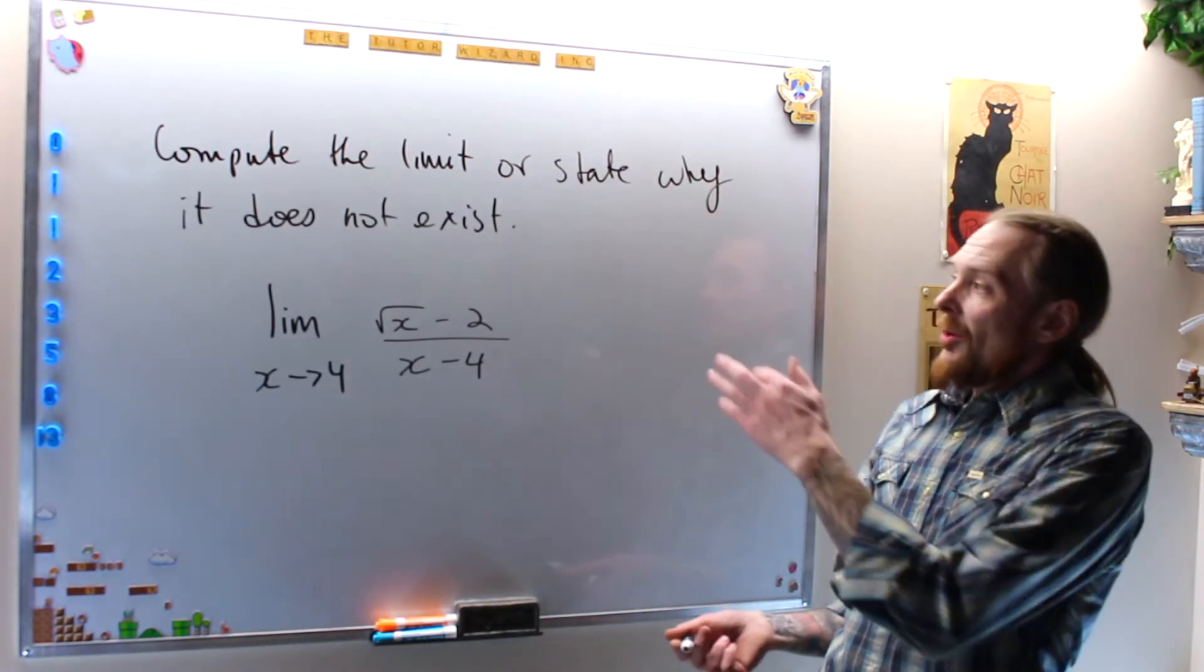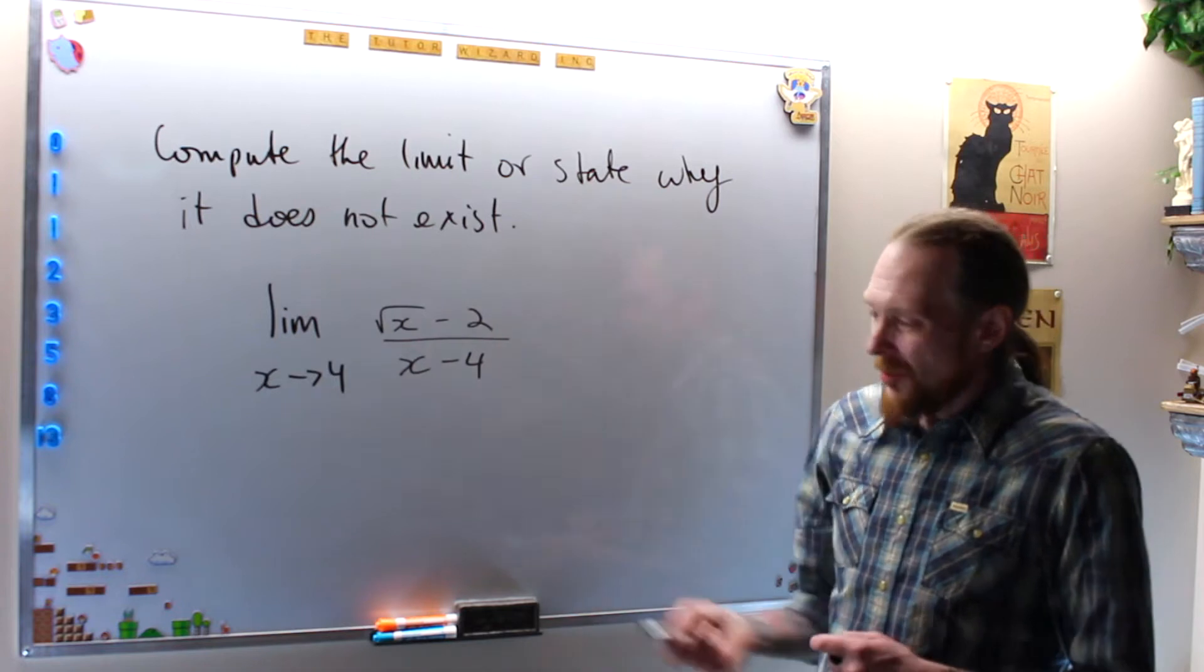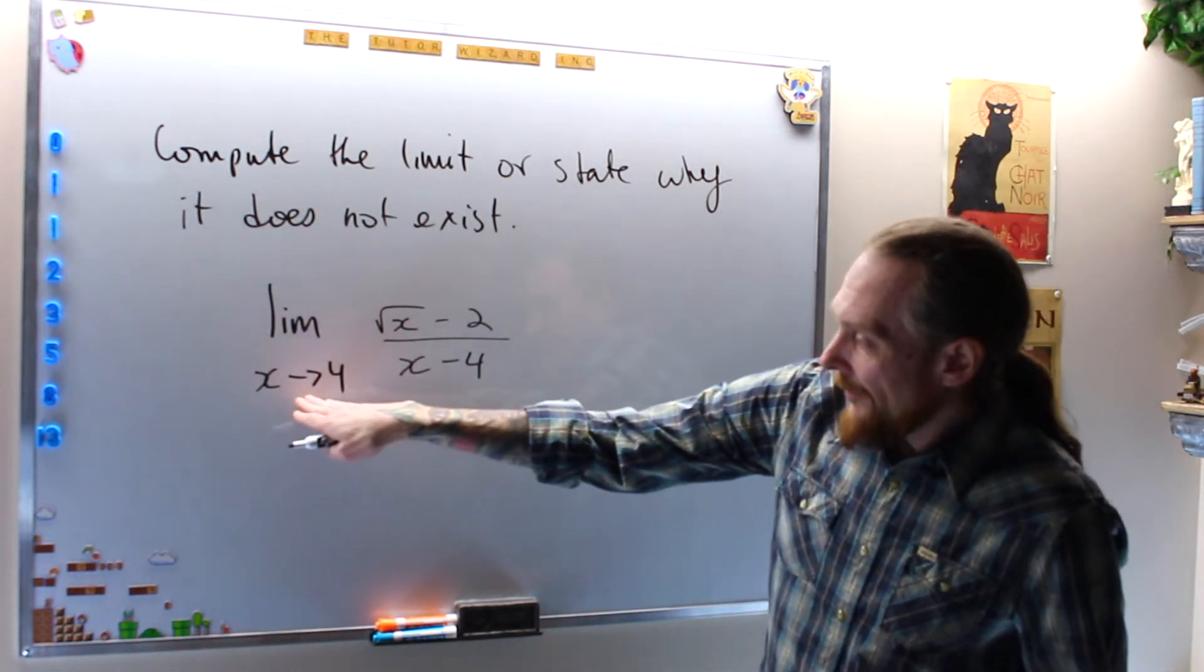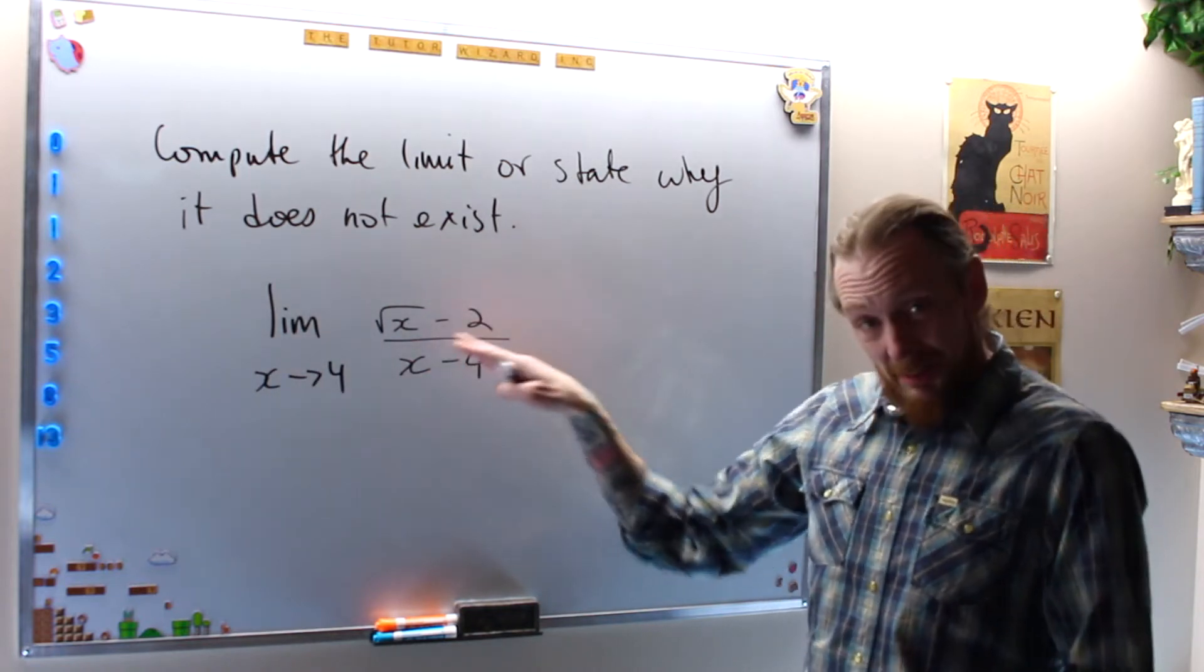All right, so compute the limit or state why it doesn't exist. In this case, what we want to do every time essentially is, I look where I'm going first. x is going to 4, and then I look at my expression. Is there a problem at 4?